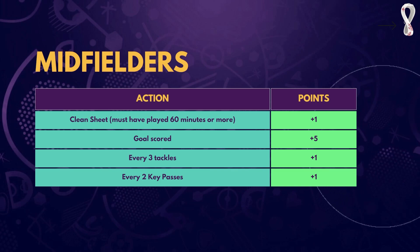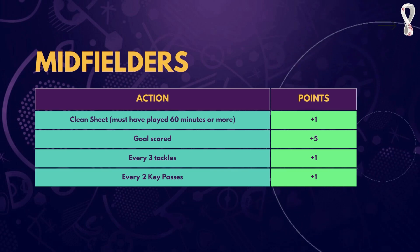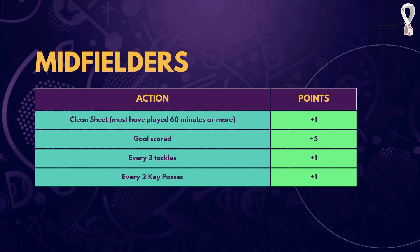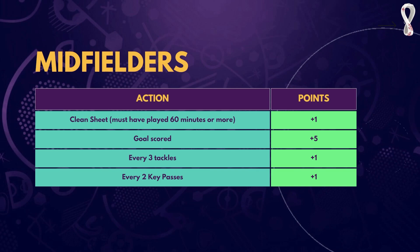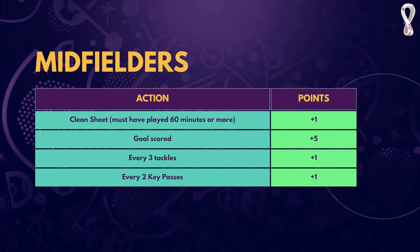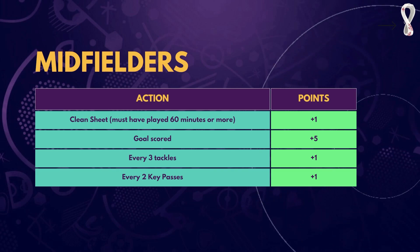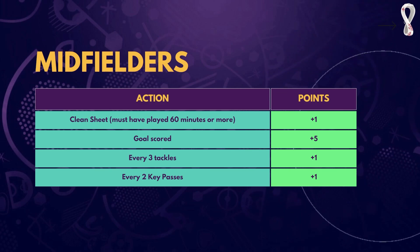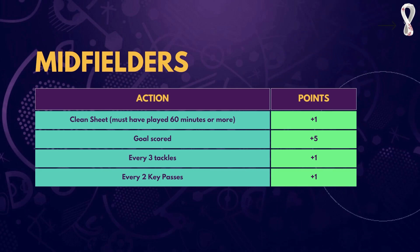For midfielders, a clean sheet gives plus 1, and the player must have played 60 minutes or more. For every goal scored it's plus 5. For every 3 tackles it's plus 1, and for every 2 key passes in a game it's plus 1 as well. Try to get in players like Kevin De Bruyne or Sané in the premium category, and also consider at least one budget enabler who can get tackles and key passes to help you achieve a better overall team balance.